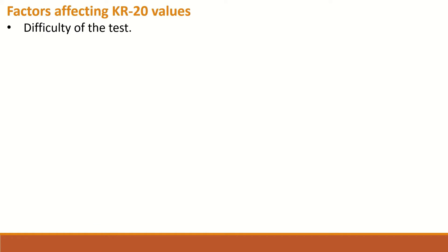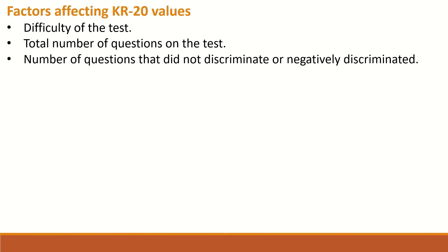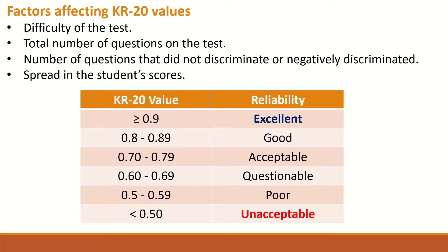There are several factors that affect the KR20 value. The first is the difficulty of the test. The second is the total number of questions on the test. The third is the number of questions that did not discriminate or negatively discriminated. And finally, the spread in the student scores. The table below describes the range for KR20 values and the corresponding reliability level.